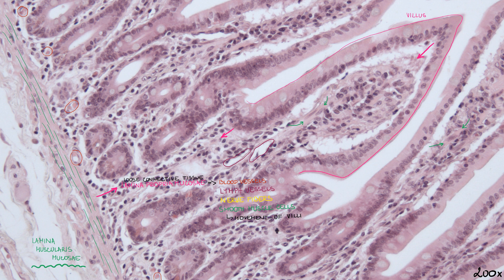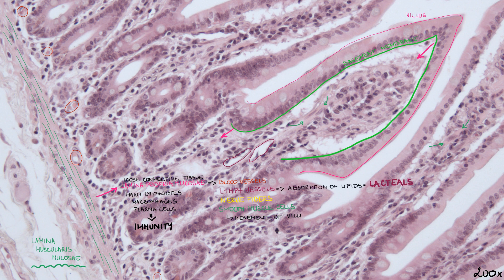There are many lymphocytes, macrophages, and plasma cells under the basement membrane of the epithelium. They play a role in immunity against pathogens, forming an immunological barrier. Lymphatic vessels begin as closed tubes; they take part in absorption of lipids and are called lacteals. The lymph inside them is milky due to the presence of lipids, and is therefore called chyle.